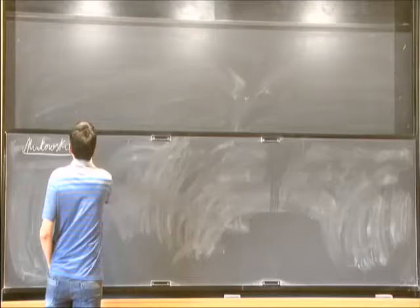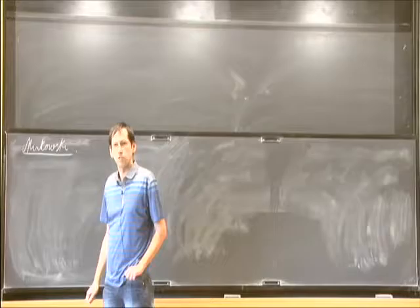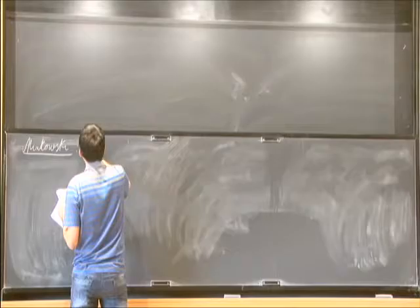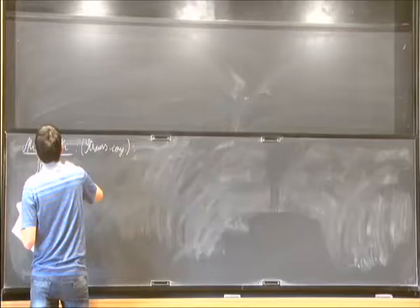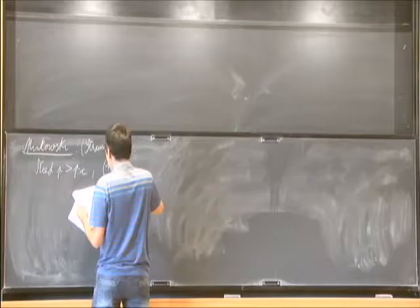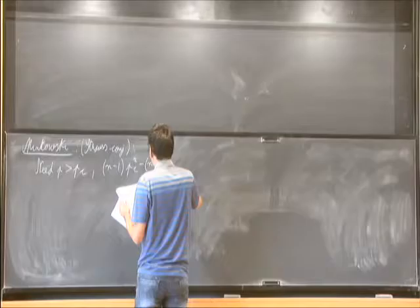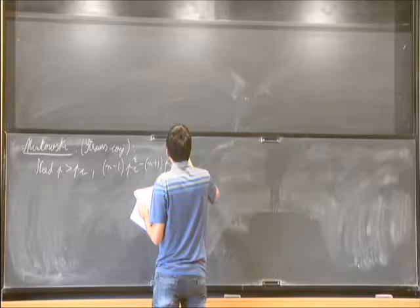Let me start with the Minkowski background. For the Minkowski spacetime, the interesting answer — known as the Strauss conjecture on Minkowski — is that you have global existence exactly when p is strictly bigger than p_c, where p_c solves the quadratic equation: (n-1) p_c^2 minus (n+1) p_c minus 2 equals 0.